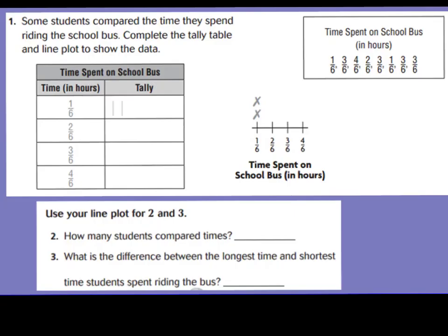In your GoMath book, on lesson 12.5, you're going to have this question. Let's do it together. Here's an example of how you would take a survey to create a line plot. This is an example of a survey — these are the different times that students were surveyed about how long they spent on a school bus in hours. When you take your survey, you can record your data in a tally chart.